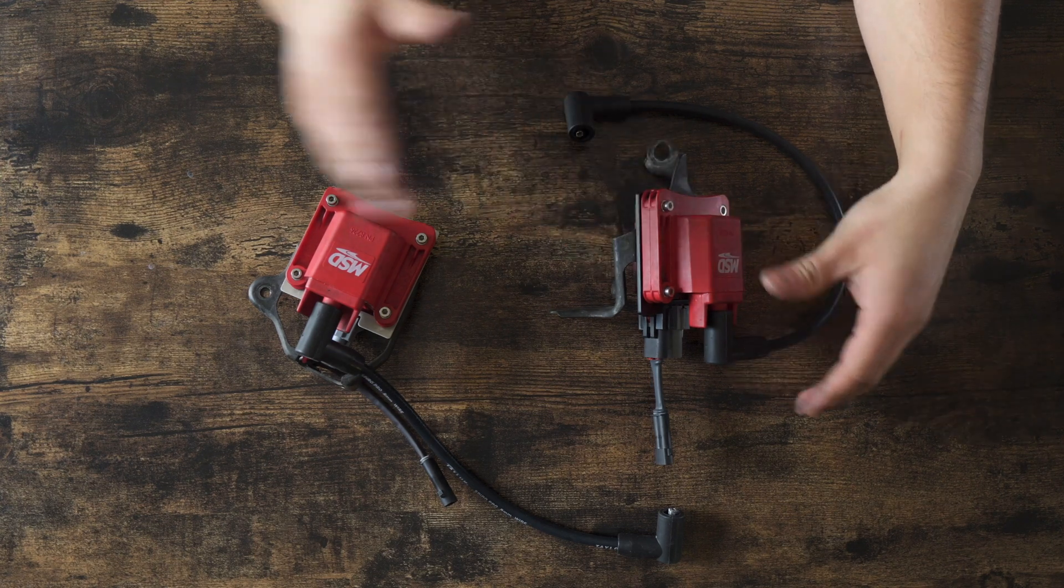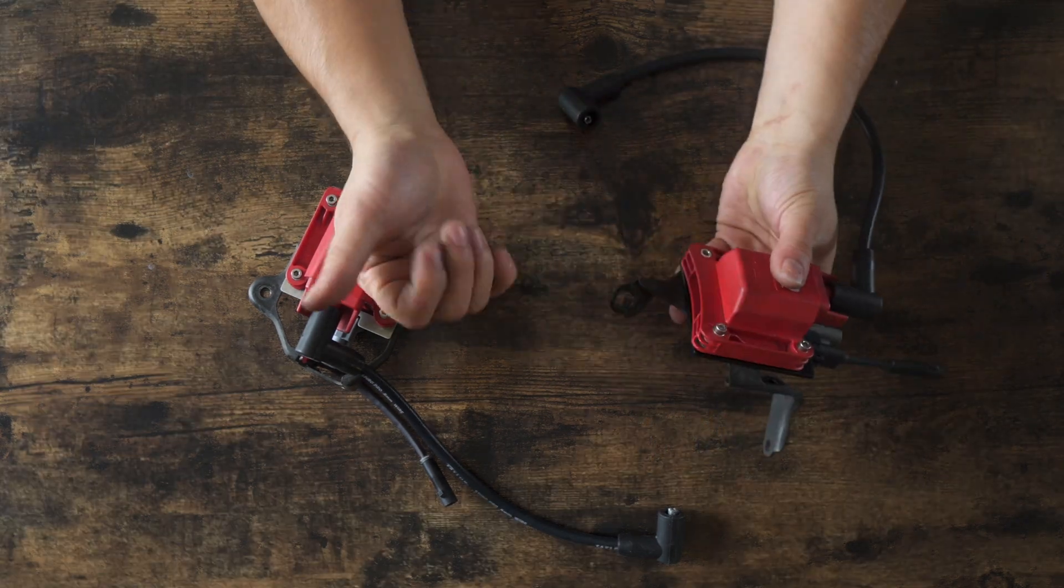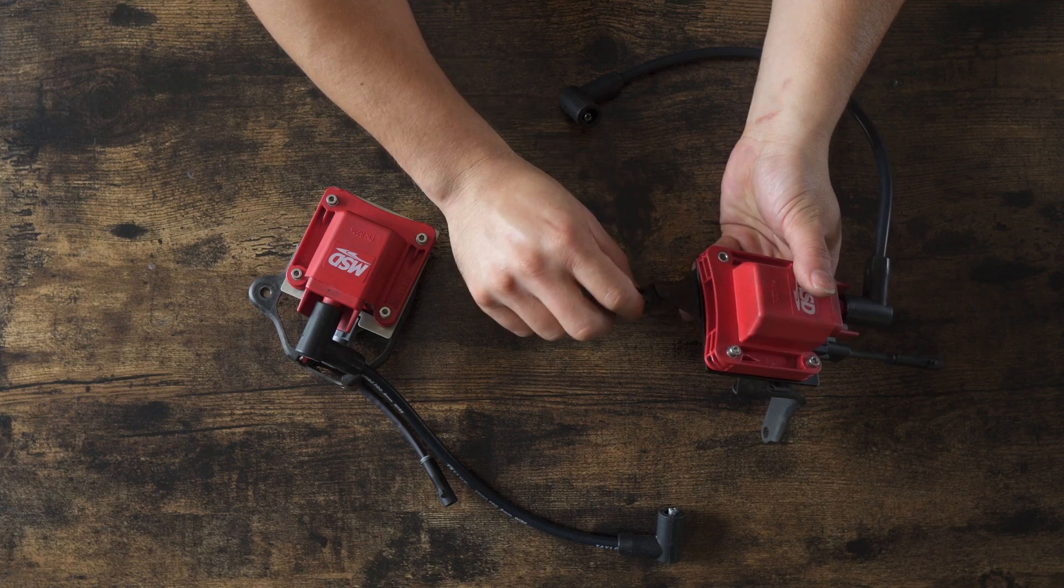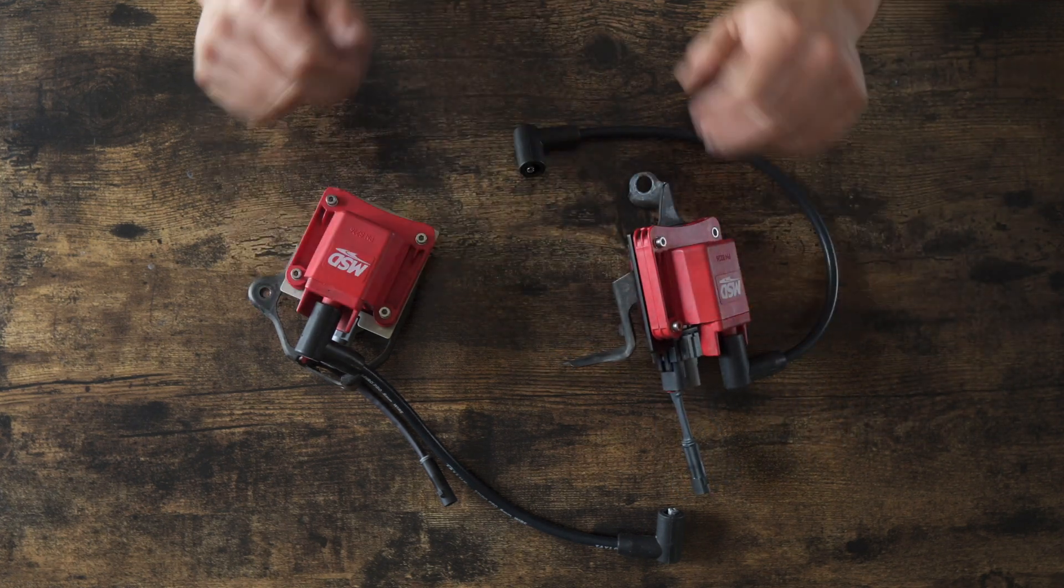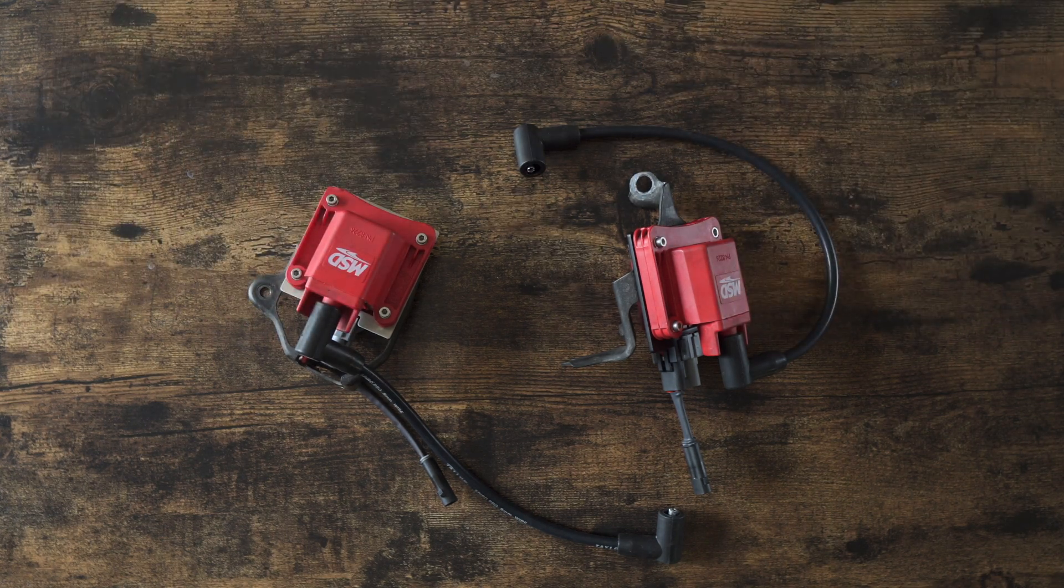And again, just like on the first generation that I have next to me off camera, 14 millimeter bolts to the head and then a 10 millimeter right here. And this one can go back on. And that's how you install the kits.